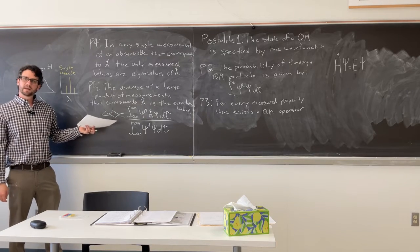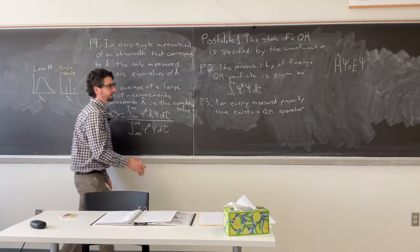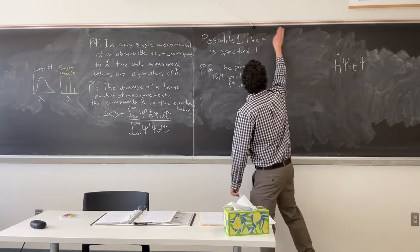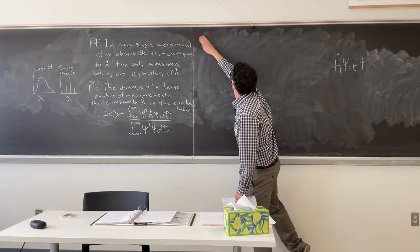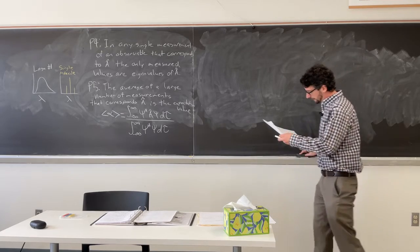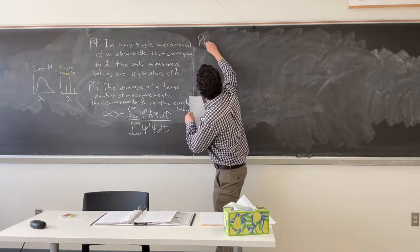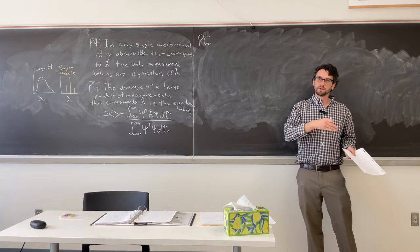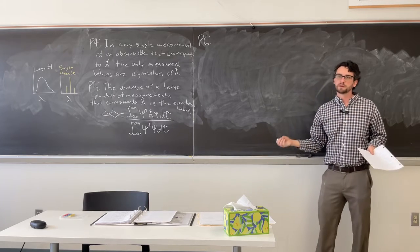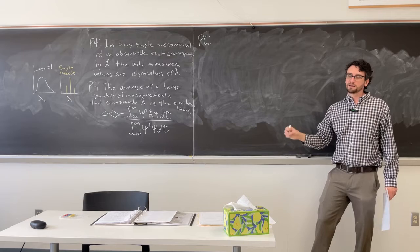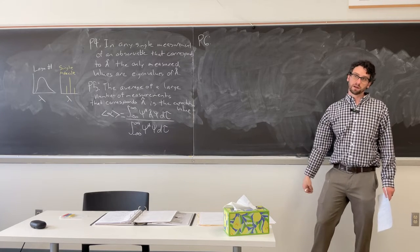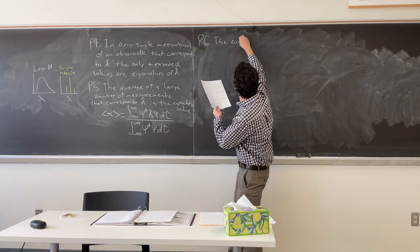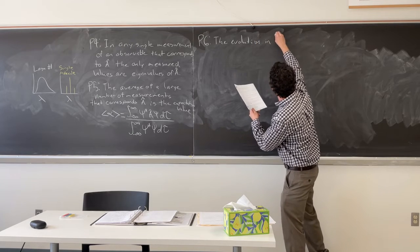We'll hit expectation values again in a spot that makes more sense when we talk about particle in a box. The last postulate, which is kind of boring, kind of given at this point. The evolution of time, so if you look at a system and you watch it over time. If you're trying to model it, you just need the time-dependent Schrodinger equation to figure out what happens to it.